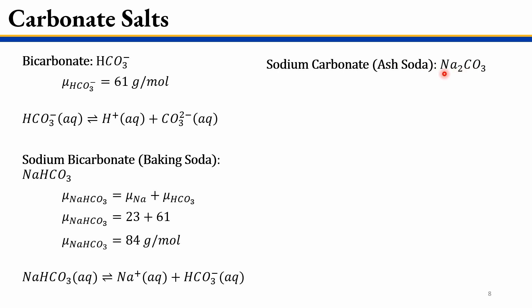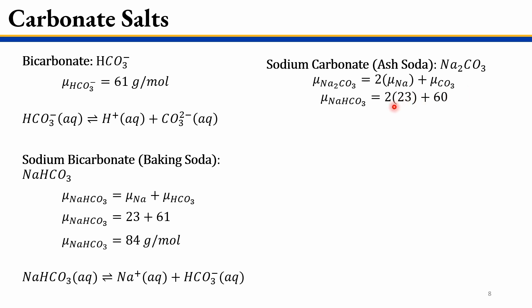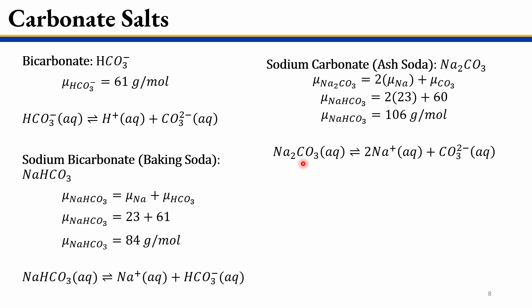We're also looking at sodium carbonate, also known as soda ash, which is Na2CO3 — two sodiums attached to one carbonate. The molecular weight of sodium carbonate is 2 times 23 plus 60, giving 106 grams per mole. Sodium carbonate dissociates into two sodium ions and one carbonate ion; the minus two charge cancels with two plus one charges for an overall neutral molecule. These are all the chemical species we're dealing with.